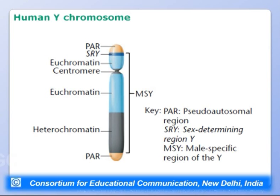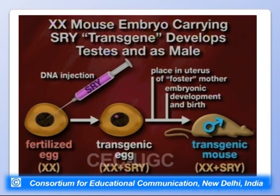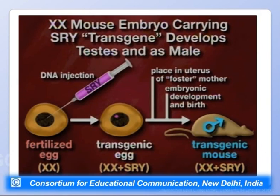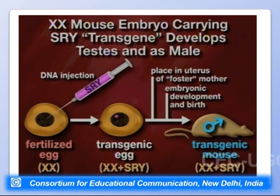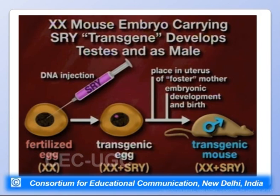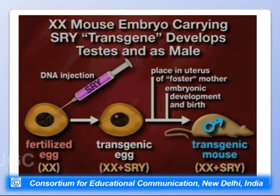The SRY gene's role was confirmed by a transgenic experiment: an XX mouse embryo carrying an SRY transgene developed testes and grew as a male. A fertilized egg with XX constitution was injected with the SRY gene; the transgene integrated into the chromosomes. The embryo was placed into a foster mother's uterus, developed normally, and the resulting transgenic mouse was male — demonstrating that SRY alone is sufficient to govern maleness.